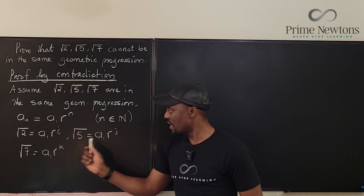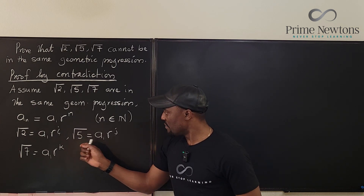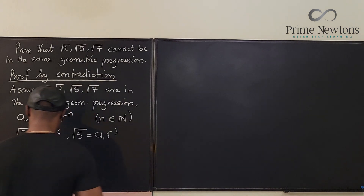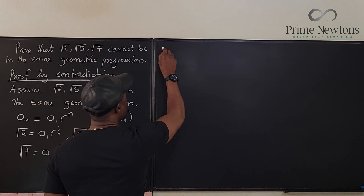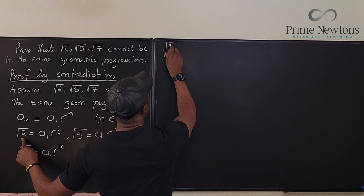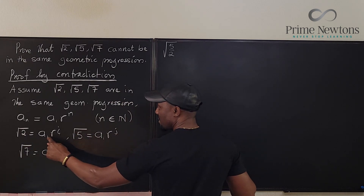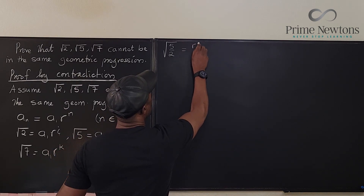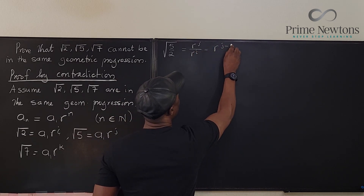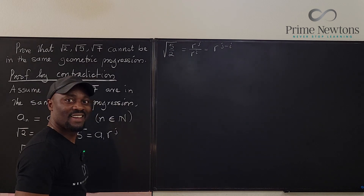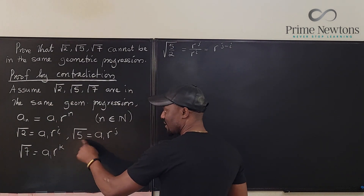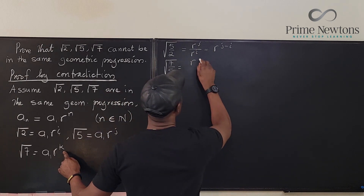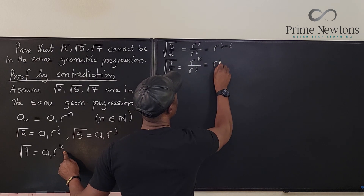Since all three expressions share a₁, we can eliminate it by dividing. Dividing the second expression by the first: square root of 5 over square root of 2 equals r^j over r^i, which simplifies to r^(j−i). Similarly, dividing the third by the second: square root of 7 over square root of 5 equals r^k over r^j, which equals r^(k−j).